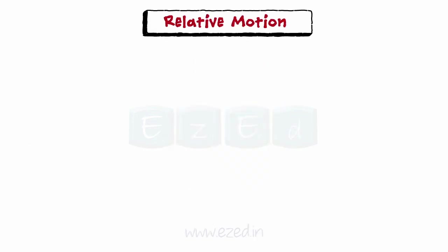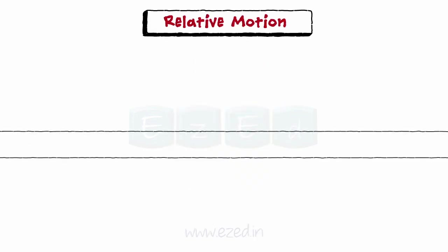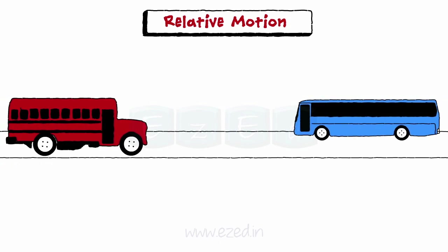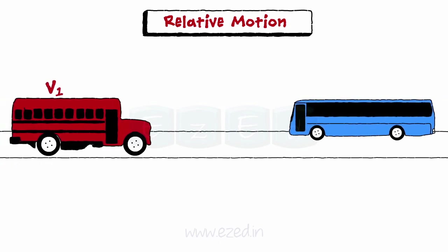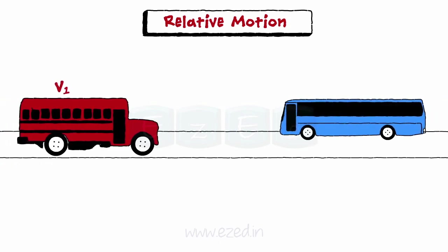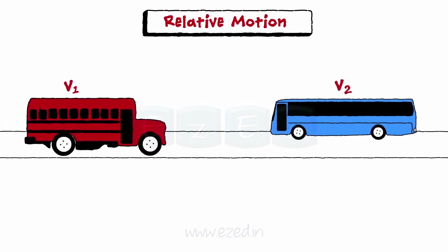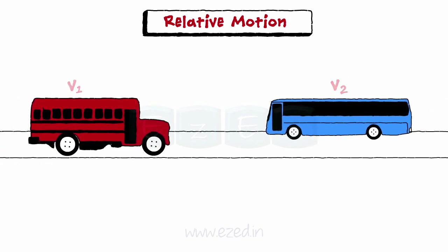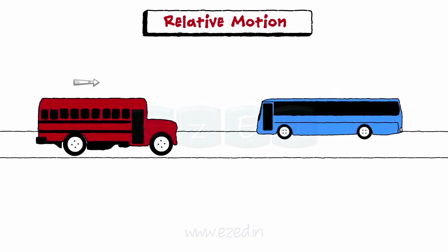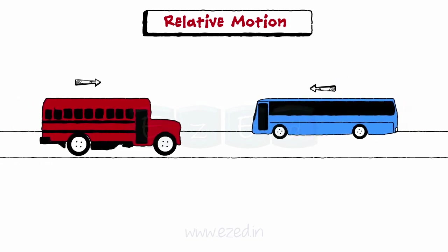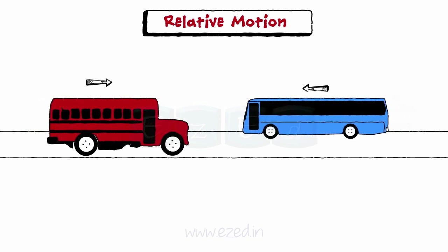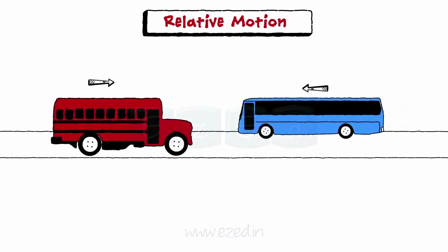What is relative motion? Consider two buses. A red bus is moving with velocity V1 and a blue bus is moving with velocity V2. Both are traveling on a straight highway, moving in opposite directions — that is, they are on the verge of collision.